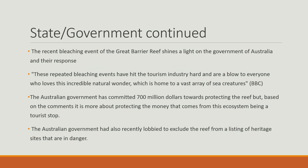One example is the recent bleaching event at the Great Barrier Reef and how it shines a light on the Australian government's response. They said that repeated bleaching events have hit the tourism industry hard and are a blow to everyone who loves this incredible natural wonder, which is home to a vast array of sea creatures. The Australian government committed $700 million towards protecting the reef, but based on the comments, it is more about protecting the tourism revenue than the ecosystem itself. The Australian government has also recently lobbied to exclude the reef from a listing of heritage sites that are in danger.